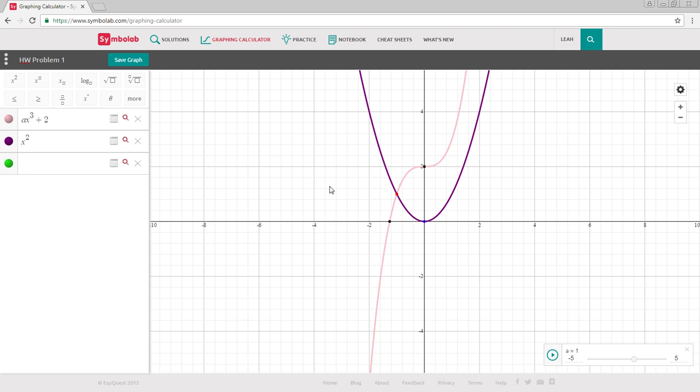Finally, for functions with parameters, Symbolab's graphing calculator offers a parameter slider at the bottom of the screen. The parameter slider allows you to set the values for the parameter and see how the function changes as the values change by clicking the play button for automated mode.